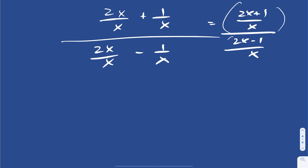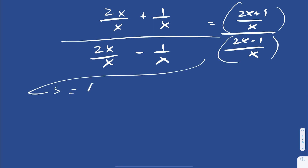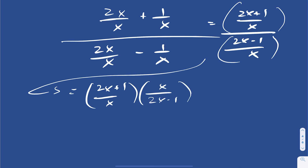Again, fraction divided by fraction — using the flip technique, you multiply by the reciprocal. The x's cancel nicely, and you get 2x plus 1 divided by 2x minus 1.